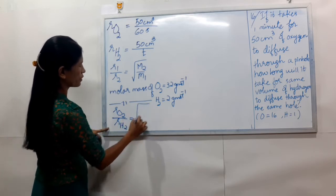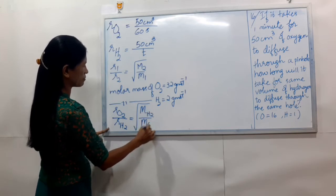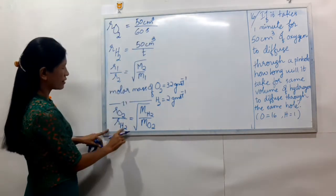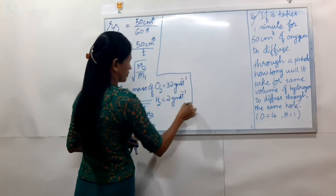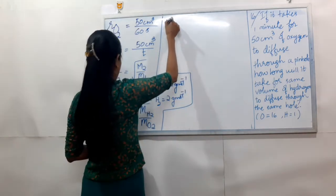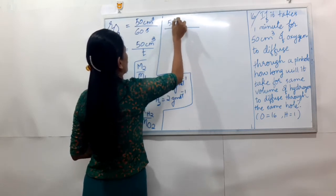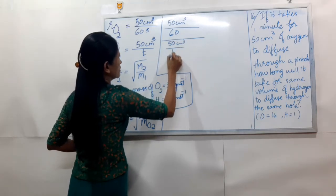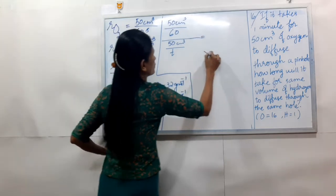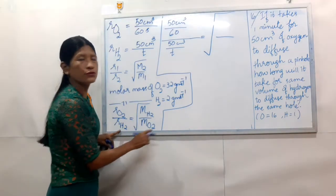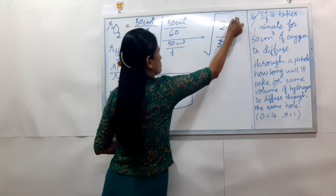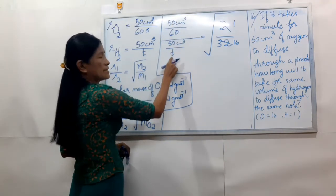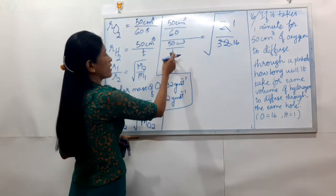Rho2 is equal to the square root of M2. M2 is equal to M1. Rho2 is equal to 50 by 60 seconds. Rho2 is equal to 50 cm squared by D.